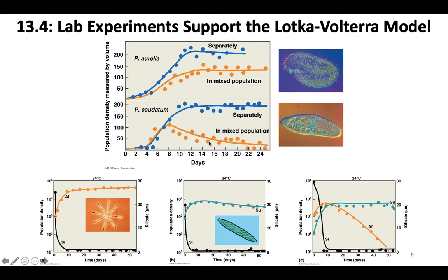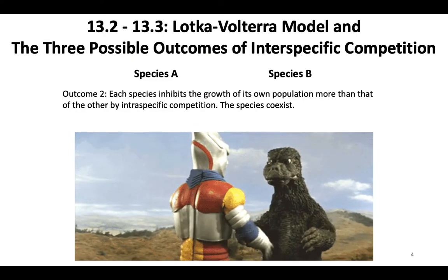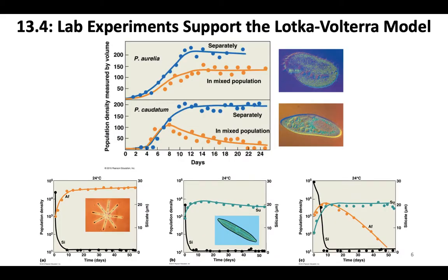Gause also grew P. caudatum with a third species, P. bursaria, and they ended up coexisting. P. caudatum fed on bacteria suspended in the solution while P. bursaria fed on bacteria at the bottom of the tube — they separated into different niches within the same culture. That would be outcome two: both species grew together in culture without either going extinct.